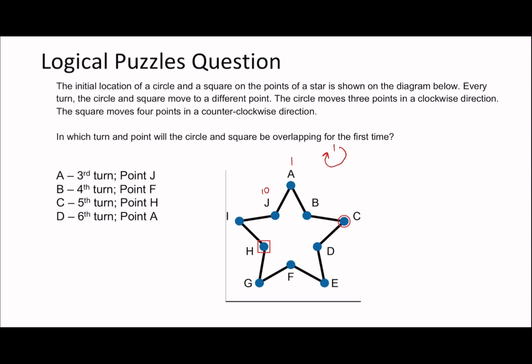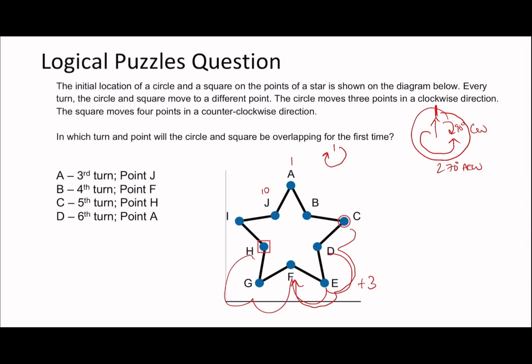The circle moves three points in a clockwise direction. The square moves four points in a counterclockwise direction. To do this question you need both shapes moving in the same direction. Going four points counterclockwise is the same as going six points clockwise, because on a 10-point star, counterclockwise four is equivalent to clockwise six.